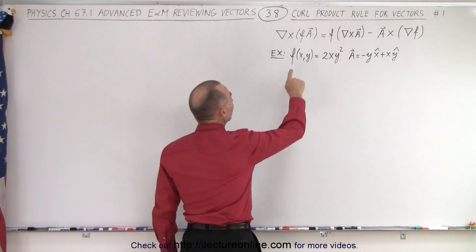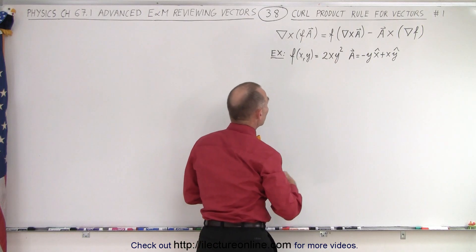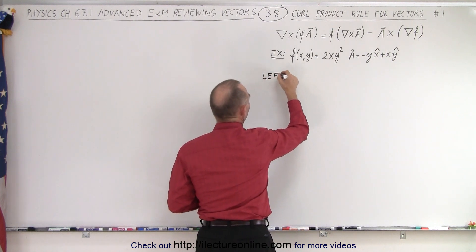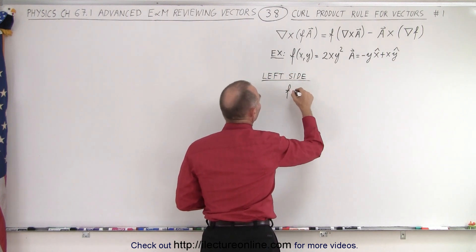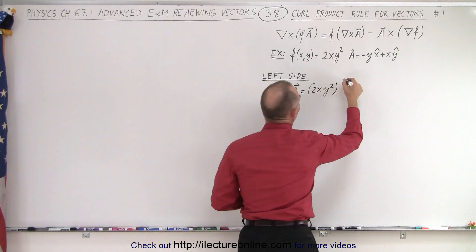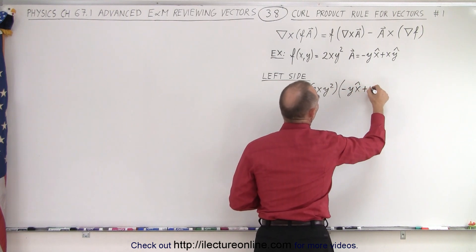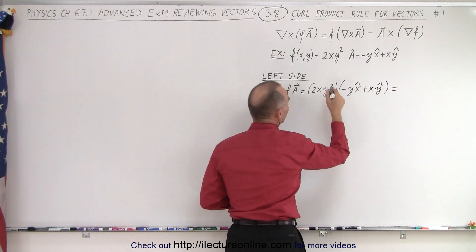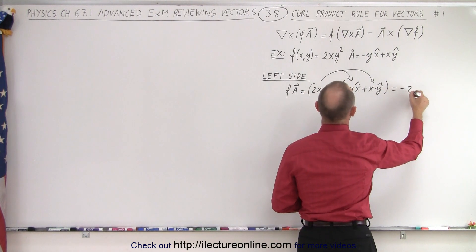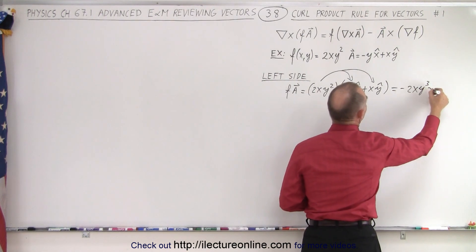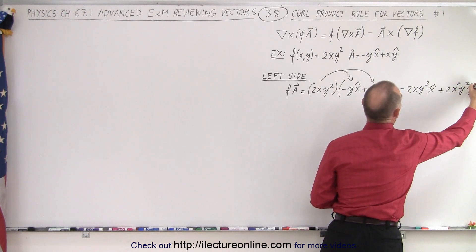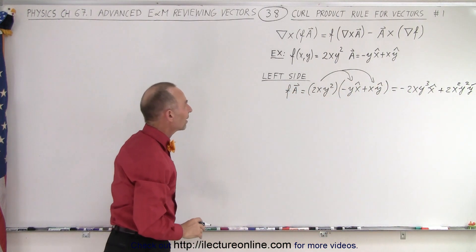First, we need to take f times a. Starting with the left side, we multiply f times the vector a, which is 2xy² times (minus y x̂ plus x ŷ). Multiplying through each of the two components, we get minus 2xy³ in the x direction plus 2x²y² in the y direction. That's f times a.